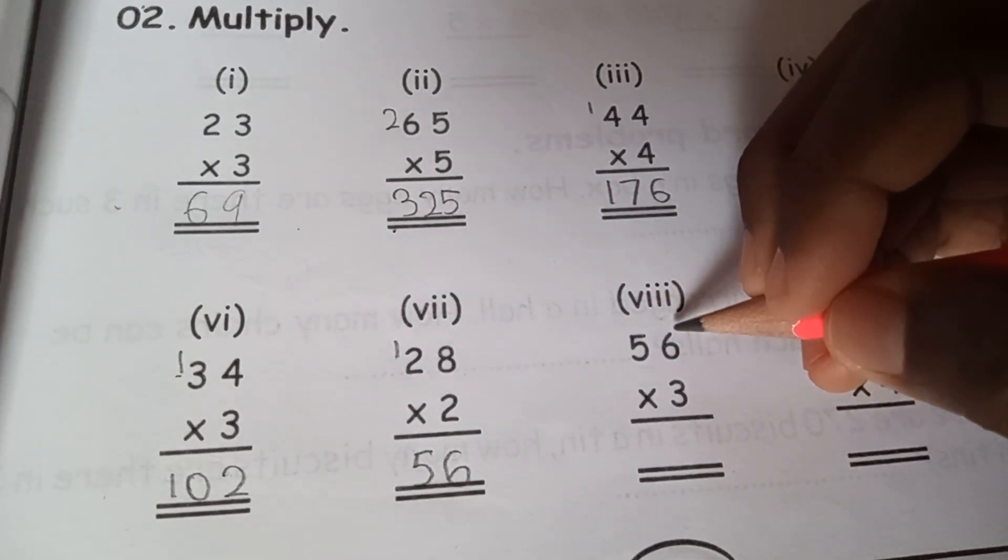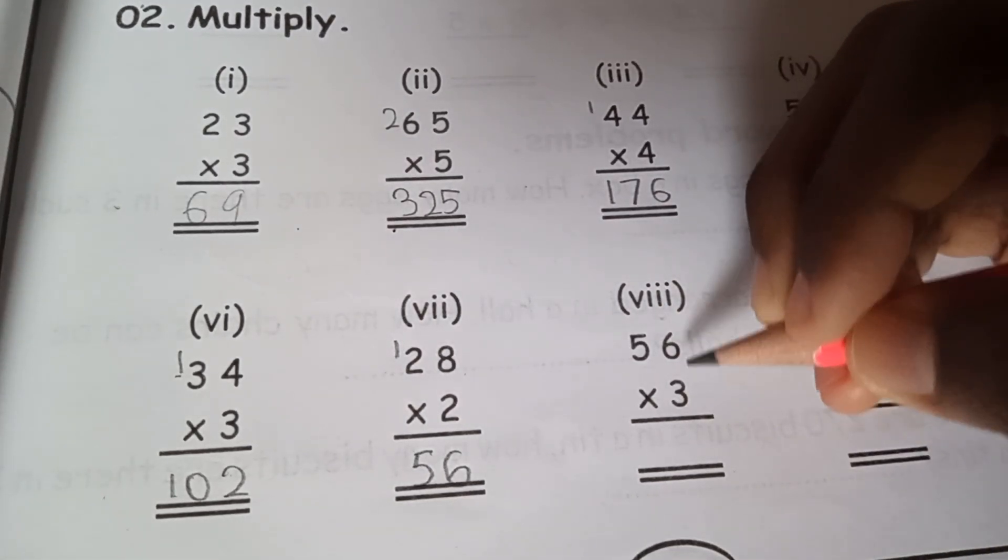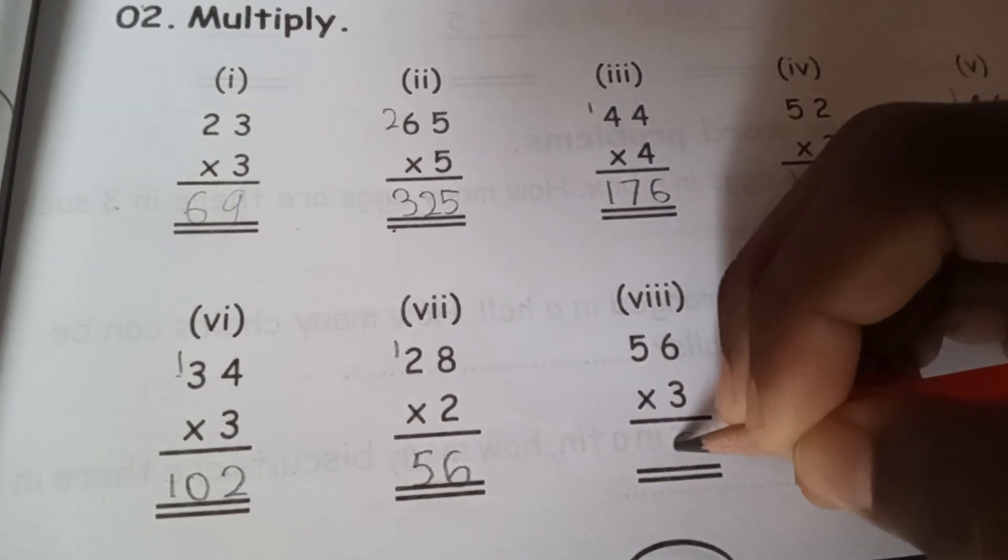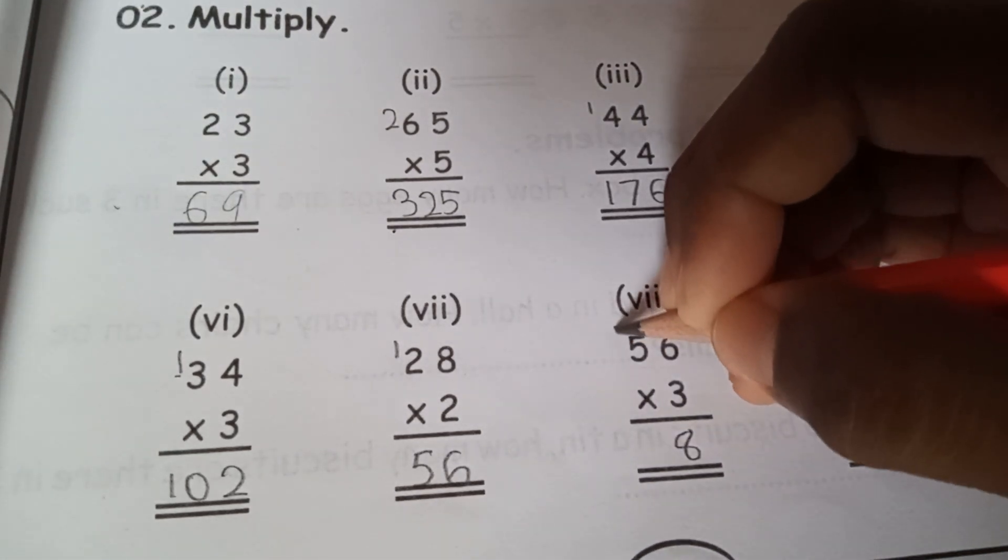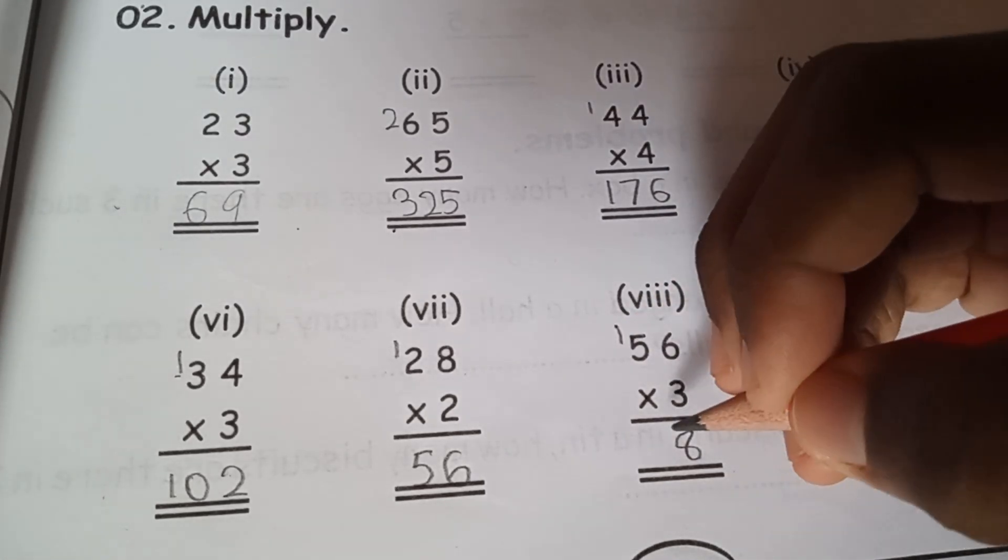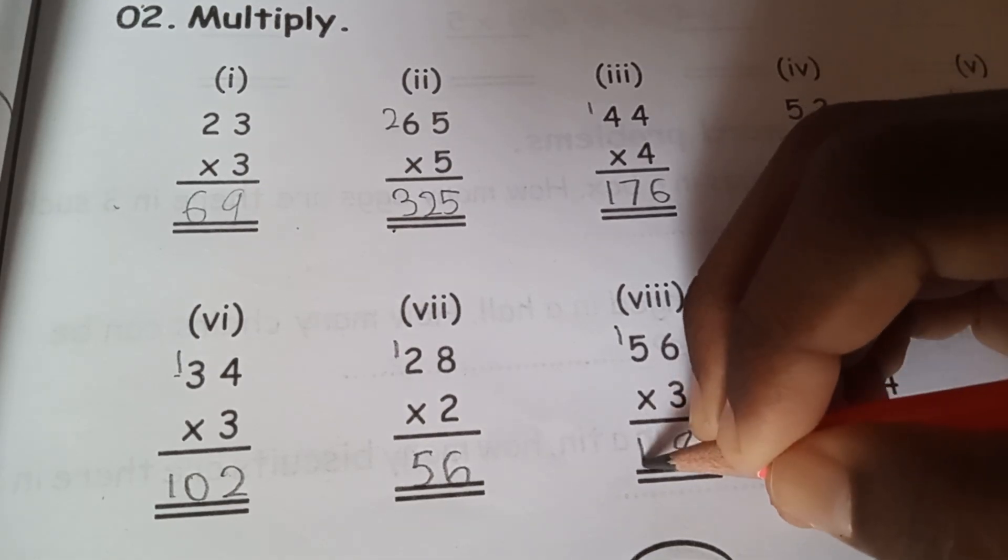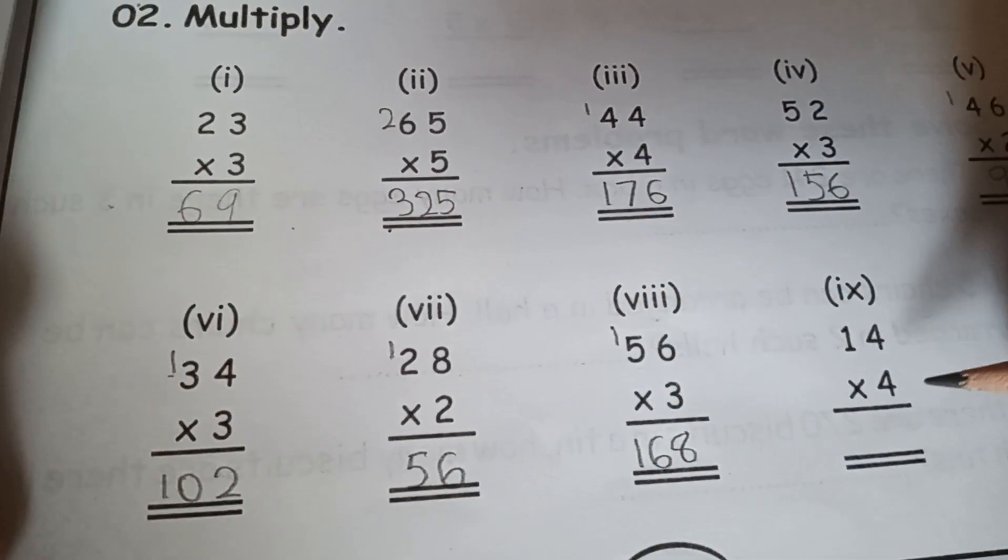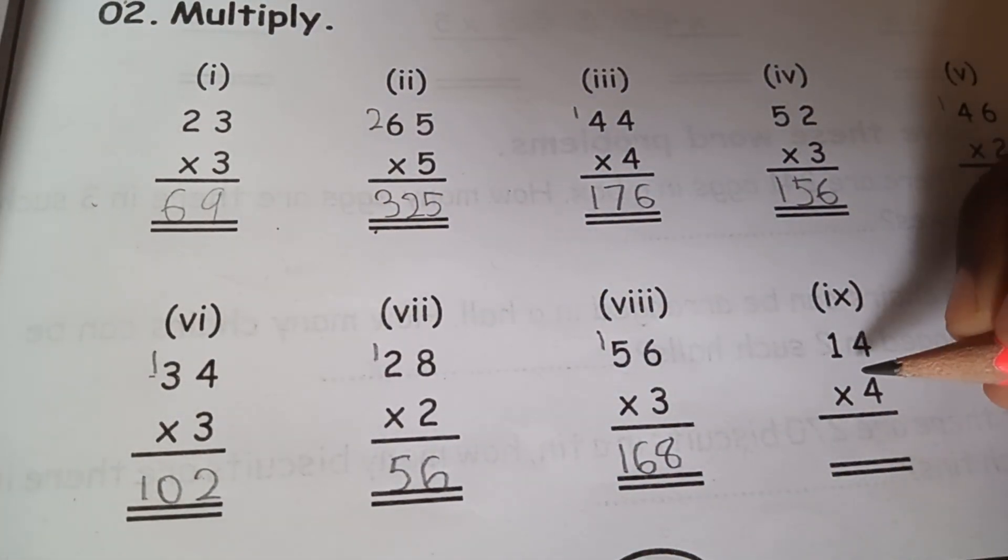56 times 3. 3 times 6 is 18, 1 goes over here. 3 times 5 is 15, 15 plus 1 is 16, so the answer will be 168. Good.